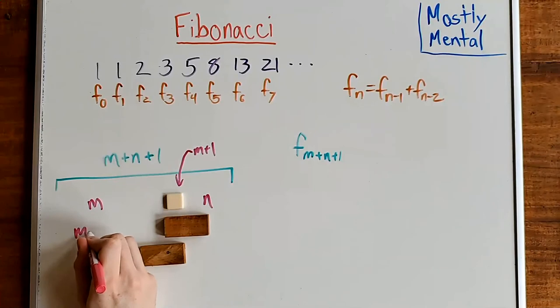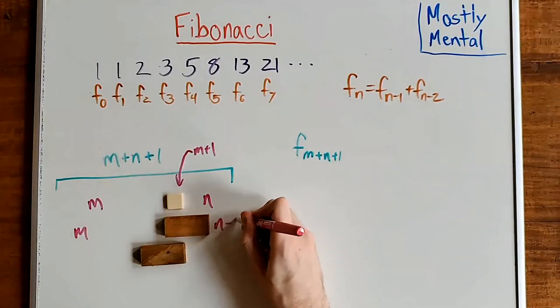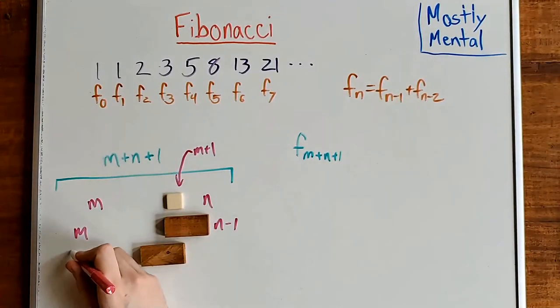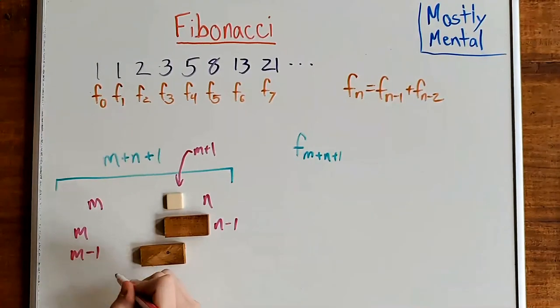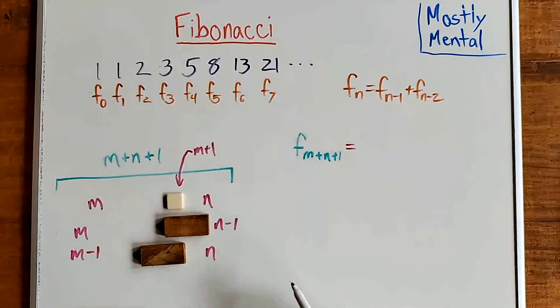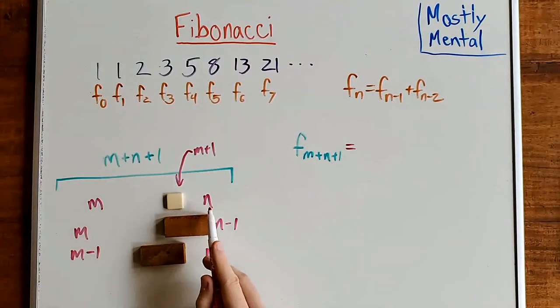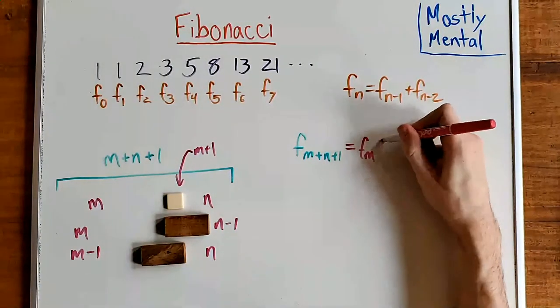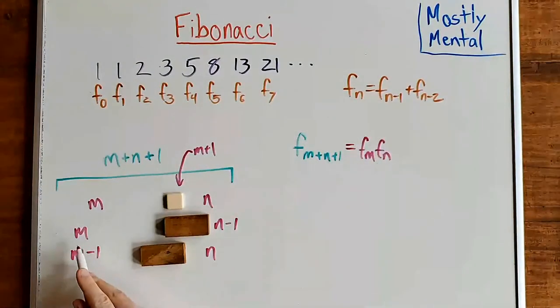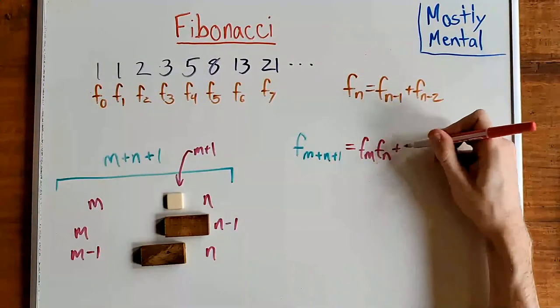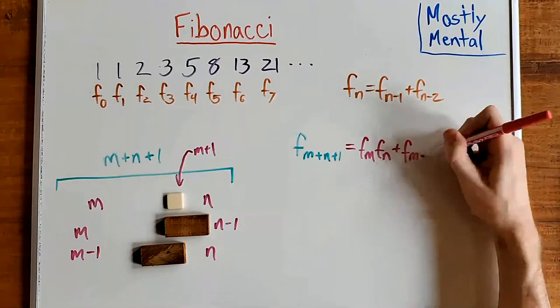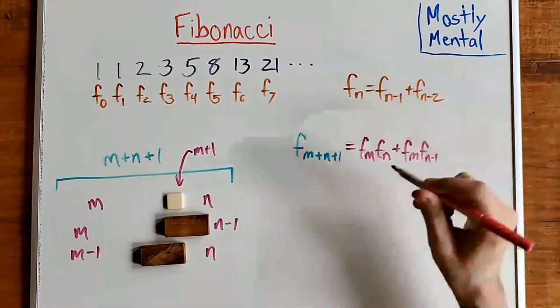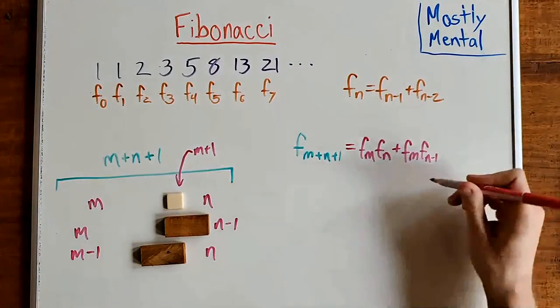And similarly, in the last case, it's m minus 1 to the left and n to the right. And so in total, that gives us Fm times Fn plus Fm times Fn minus 1 plus Fm minus 1 times Fn.